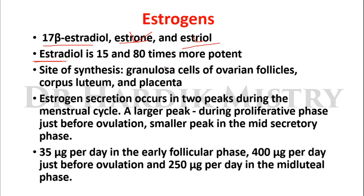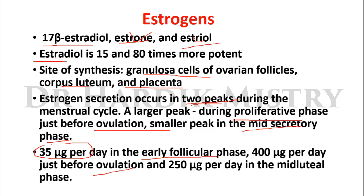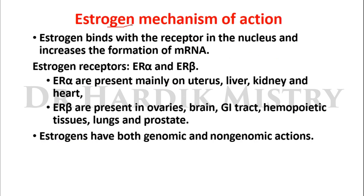Estrogens are synthesized by the granulosa cells of the ovarian follicles, corpus luteum, and placenta. Estrogen secretion occurs in two peaks during the menstrual cycle: a larger peak during the proliferative phase just before ovulation, and a smaller peak in the mid-secretory phase. The normal level is 35 micrograms per day in the early follicular phase, reaching 400 micrograms per day just before ovulation, and decreasing to 250 micrograms per day in the mid-luteal phase.